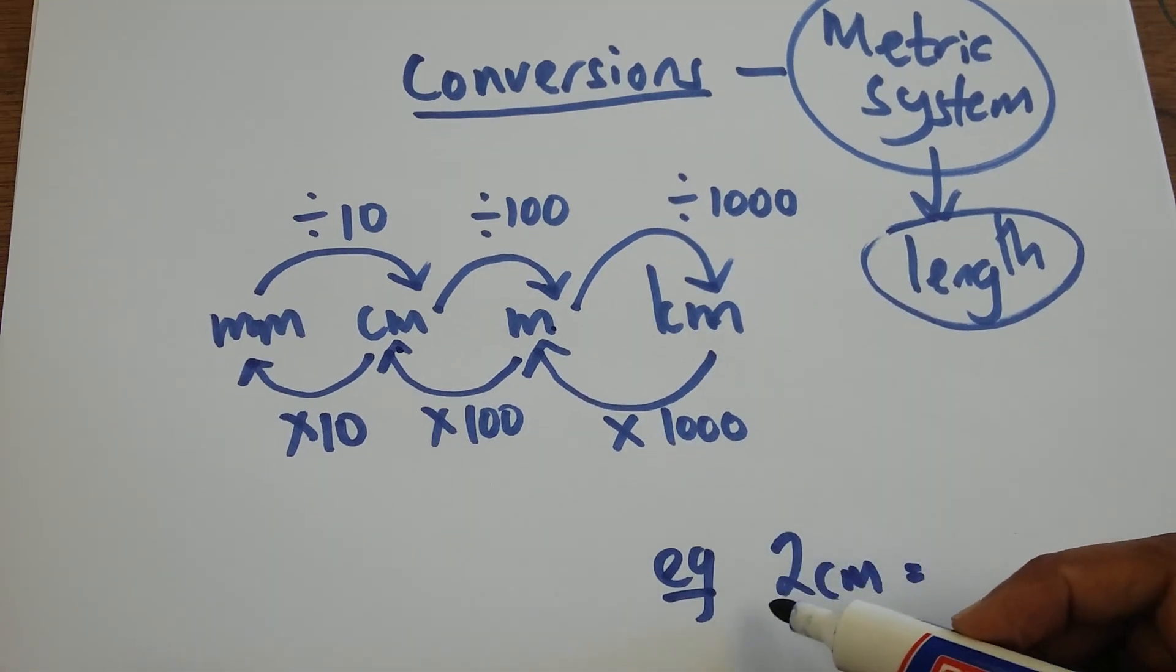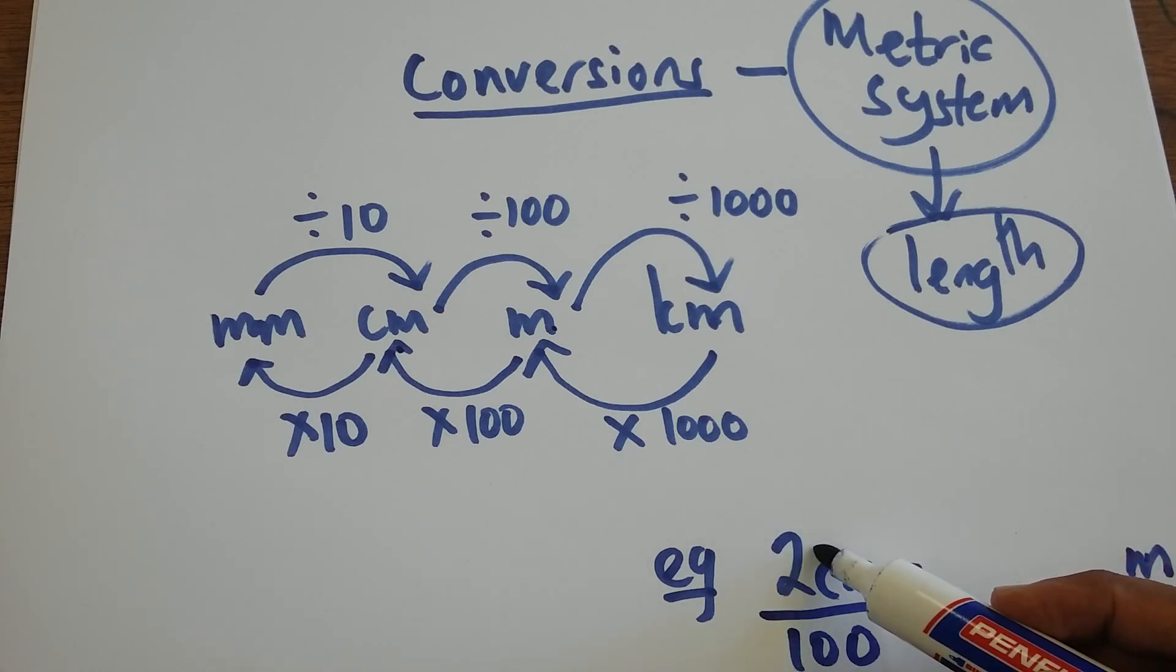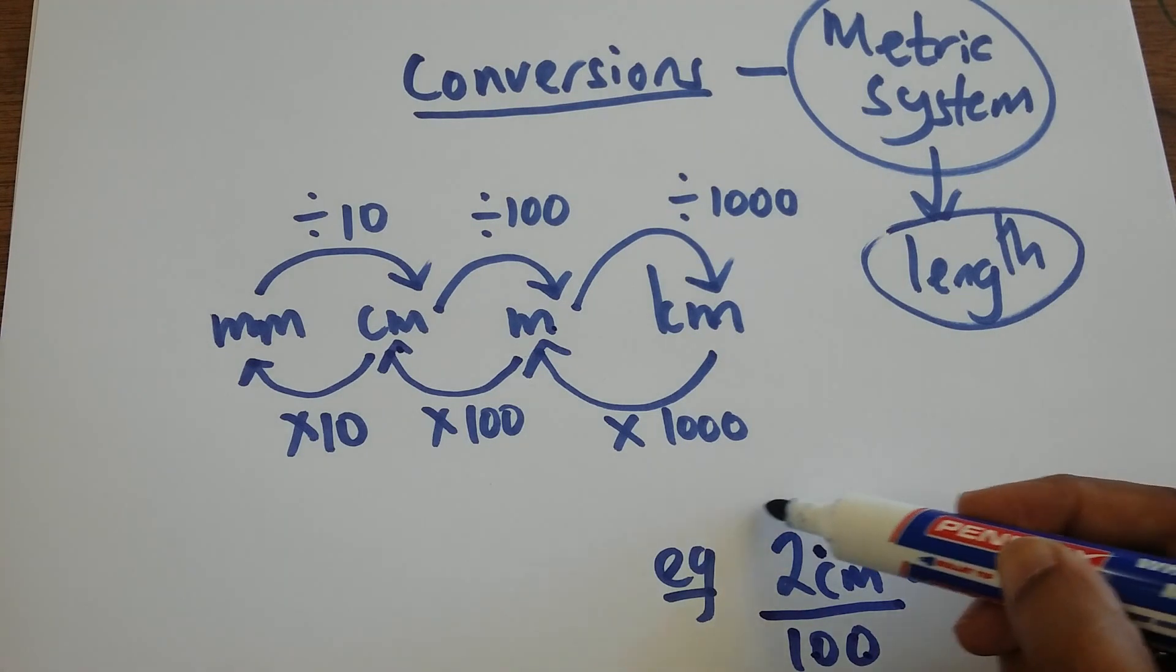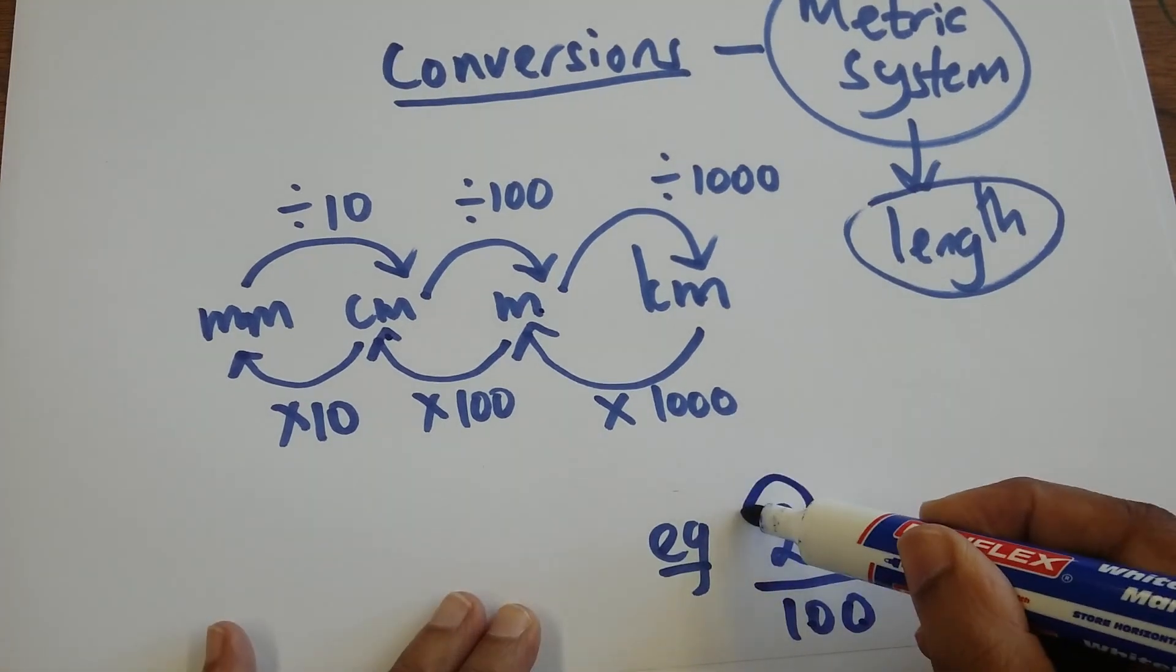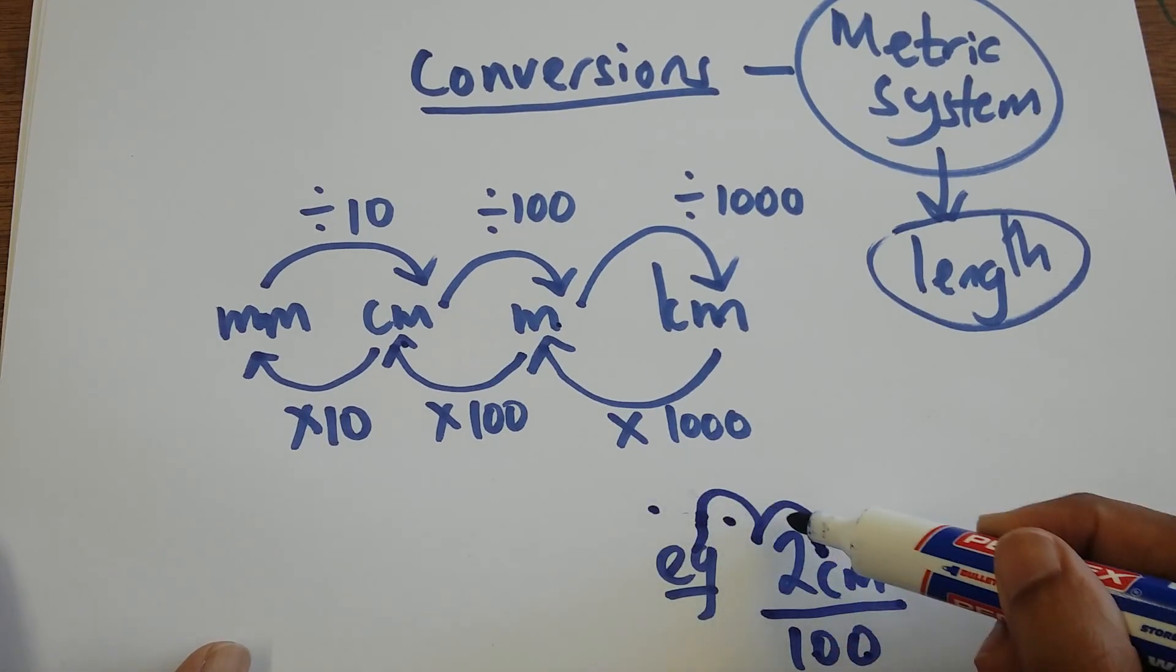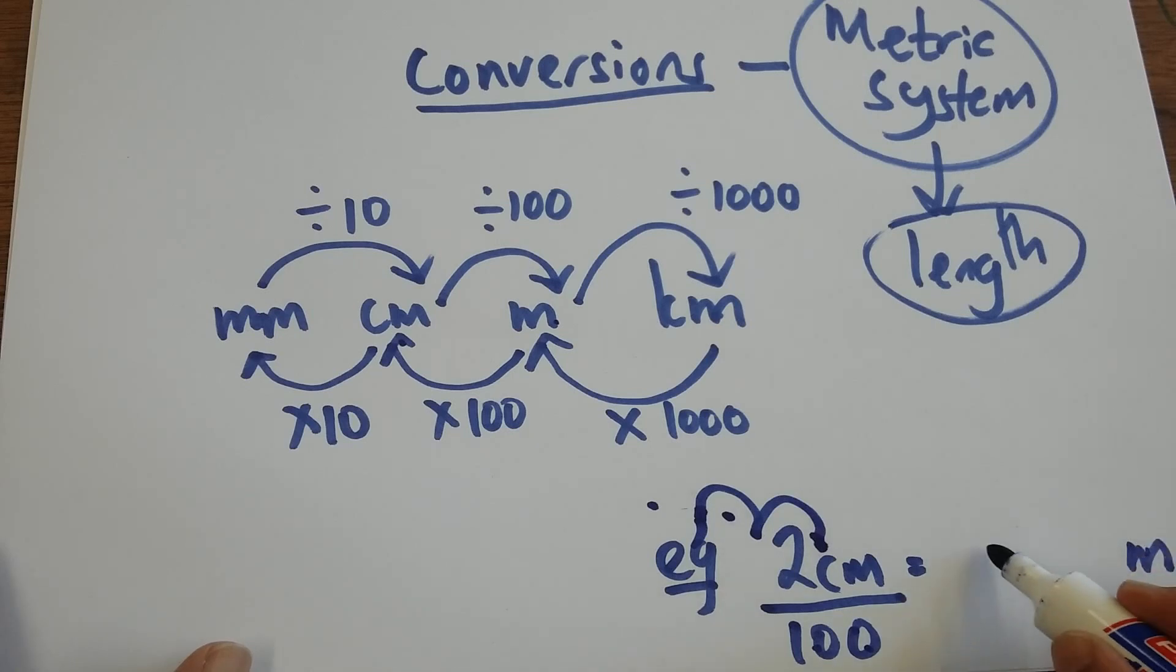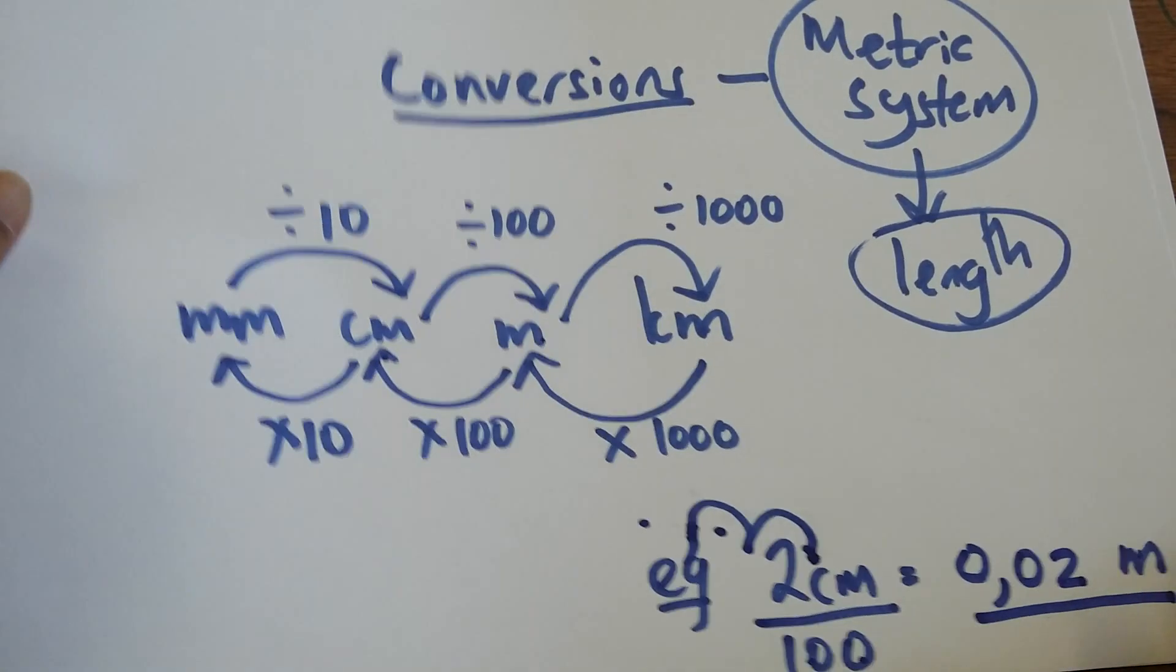So I say 2 divided by 100. I start at the end and move my comma two places in that direction. I go 1, 2. So my answer is now 0.02. So 2 centimeters is equal to 0.02 meters.